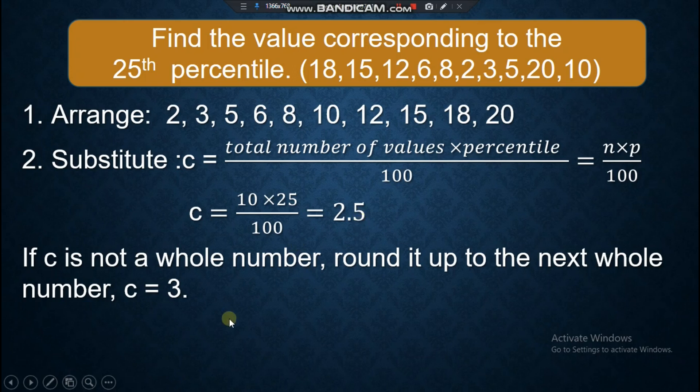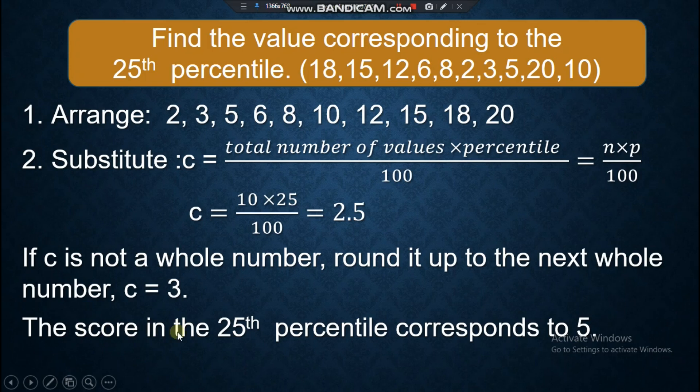So 2.5, you round it up, it becomes 3. The score in the 25th percentile corresponds to 5. Since C equals 3, you will count 1, 2, 3. So 5 is our 25th percentile. Question: what if it's 2.1? It's still 3. So it's not rounding off, but rounding it up.